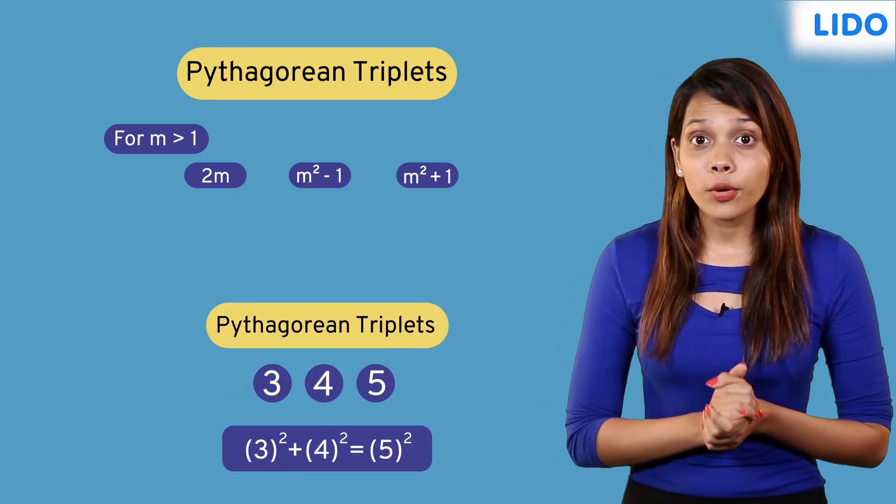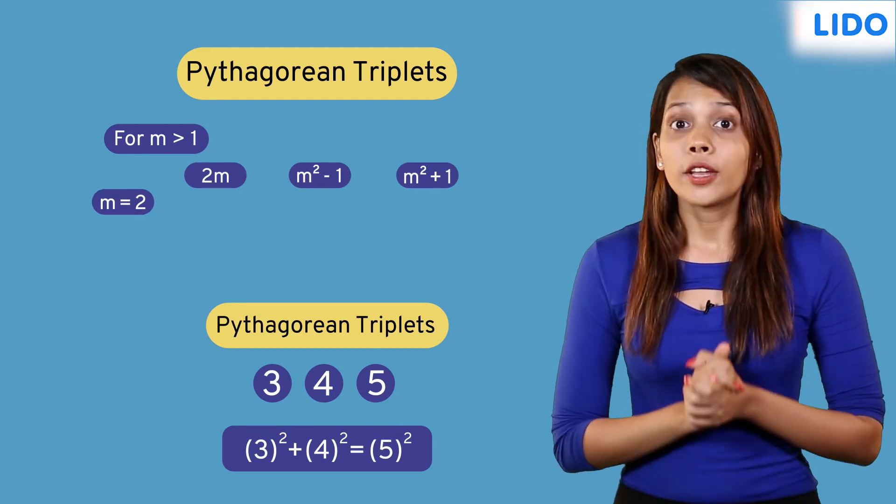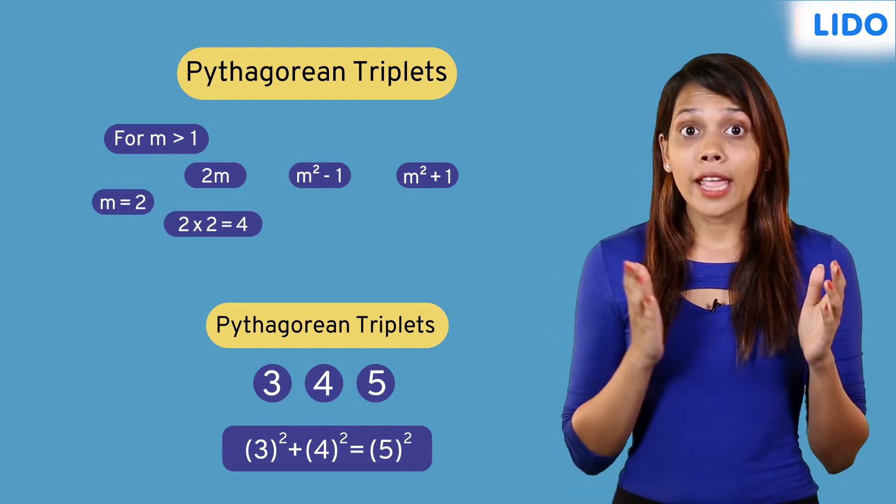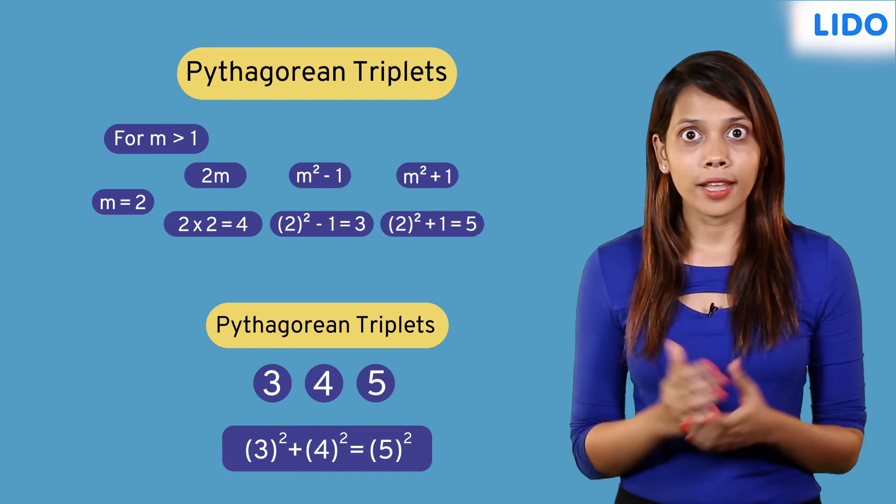Let's check this with the Pythagorean triplet we just saw. For m equals 2, 2m equals 4, m²-1 equals 3 and m²+1 equals 5. It works!